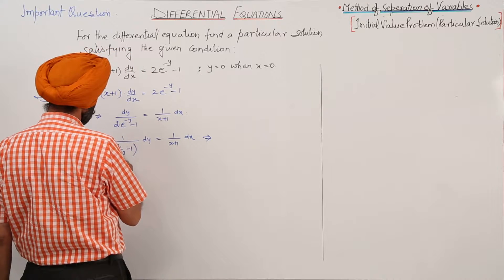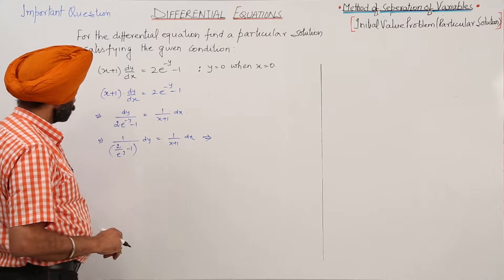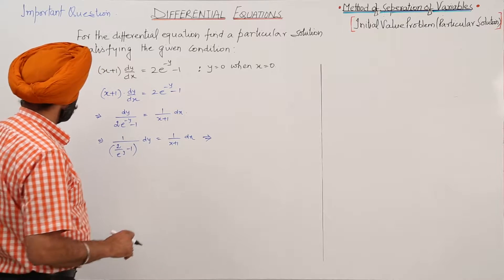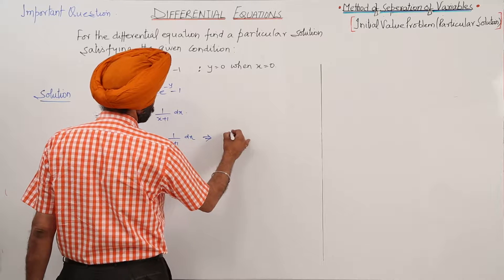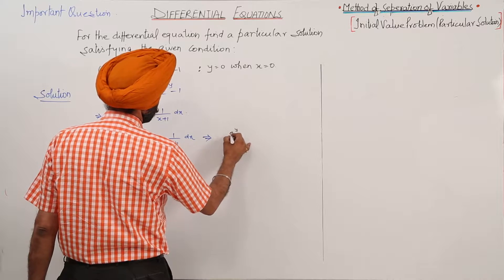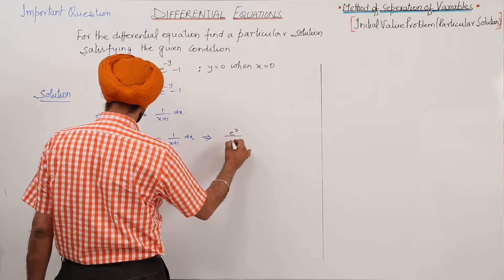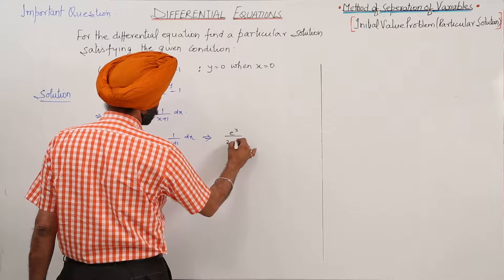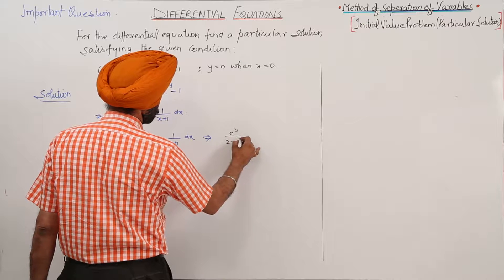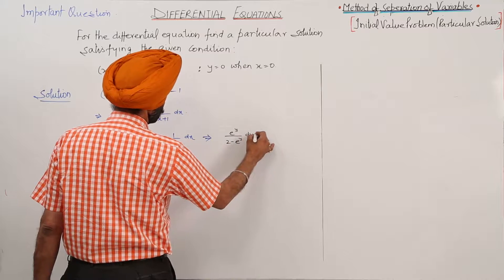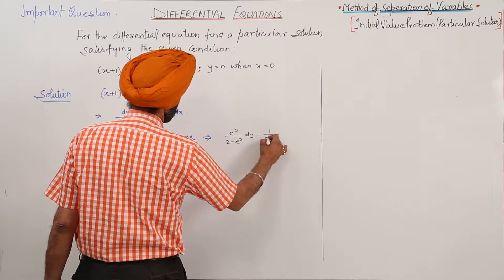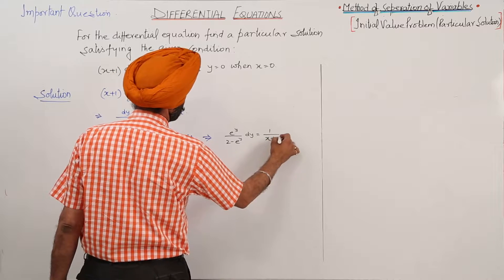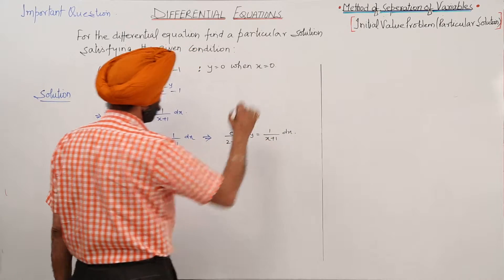This is equal to e^y. So this implies e^y upon (2 minus e^y) dy is equal to 1 upon (x + 1) dx.